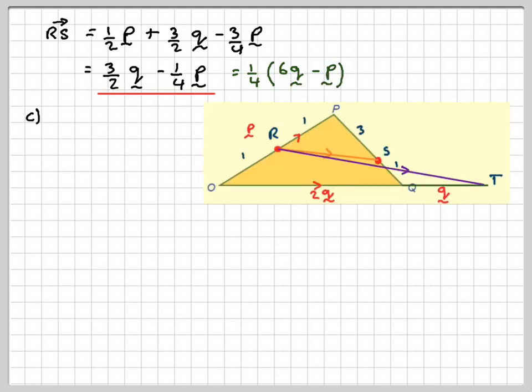The last part we're asked to show that the point R, S, and T lie in a straight line. So to do that, we need to find the vector RT. And if it's some multiple of the vector RS, i.e. if we get a 6q minus p in our vector, then R, S, and T lie on the straight line because you are using the same point R.